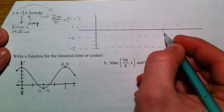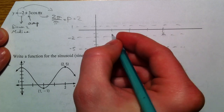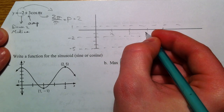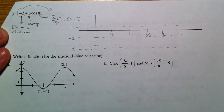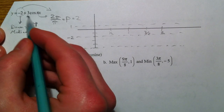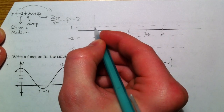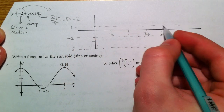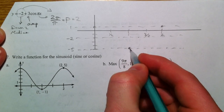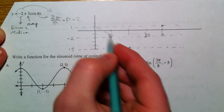So the period is 2. Cut that into 4 parts and you get one half, 1, 3 halves, and 2. The cosine starts at the peak because the 3 is positive, so it's going to start at the peak and end at the peak, with the valley in between, and midpoints on either side. So we plot our 5 points.